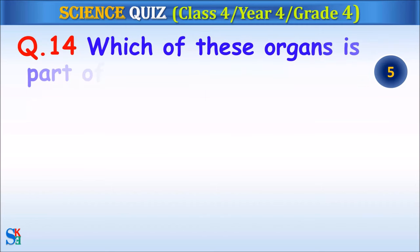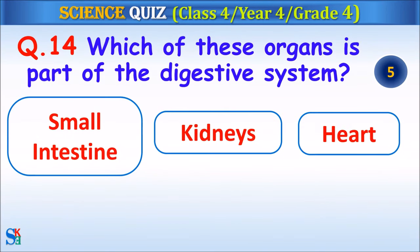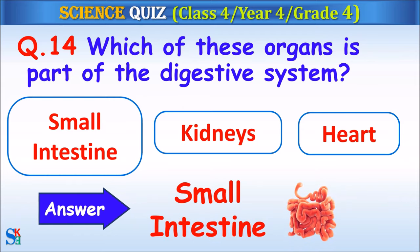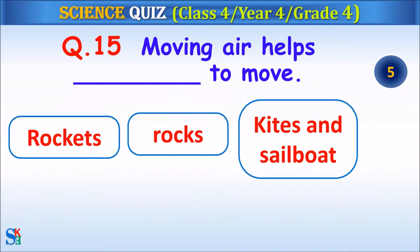Question 14: Which of these organs is a part of the digestive system — small intestine, kidneys or heart? Your time starts. Question 15: Moving air helps rockets to move, rocks to move, or kites and sailboats to move? Your time starts.